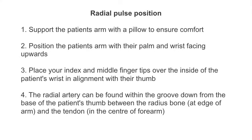For basic observations such as pulse rate, the apical beat should be used in children under the age of two, while the radial pulse would be used for children over the age of two. To obtain the correct radial pulse position, support the patient's arm with a pillow to ensure comfort. Position the patient's arm with their palm and wrist facing upwards. Place your index and middle fingertips over the inside of the patient's wrist in alignment with their thumb. The radial artery can be found within the groove down from the base of the patient's thumb, between the radius bone at the edge of the arm and the tendon in the centre of the forearm.